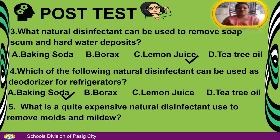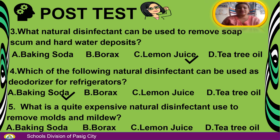Number 5: What is a quite expensive natural disinfectant used to remove molds and mildew? A. Baking soda. B. Borax. C. Lemon juice. D. Tea tree oil. The answer is D — Tea tree oil.